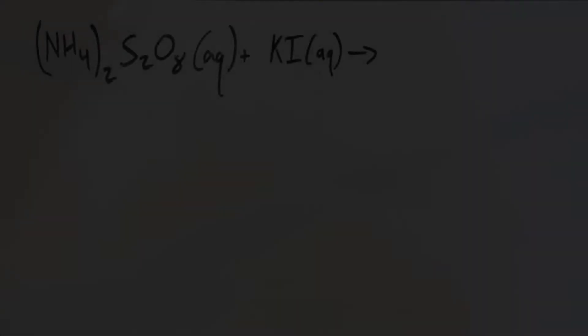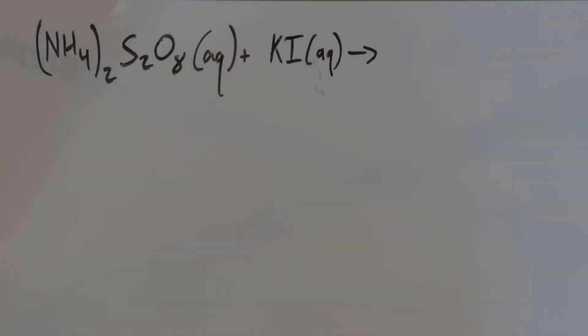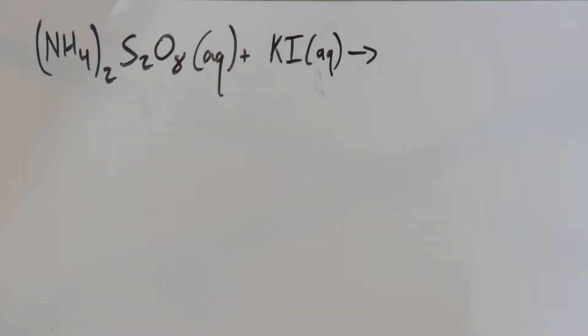What we're going to talk about today is the experiment you'll do with the lab portion of the course relating to kinetics, the topic we've been spending time on recently. Specifically, that is a reaction of ammonium persulfate, S2O8, and potassium iodide.